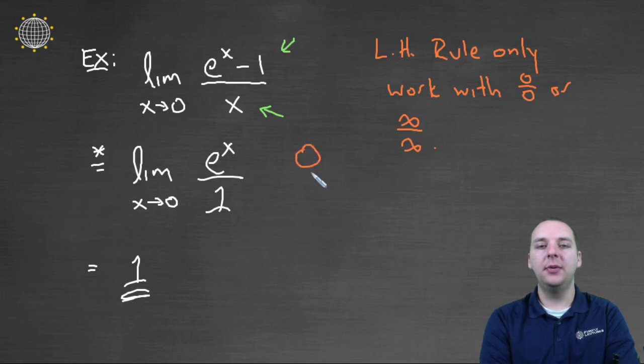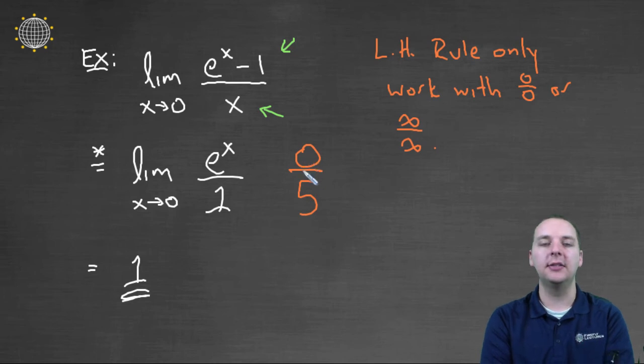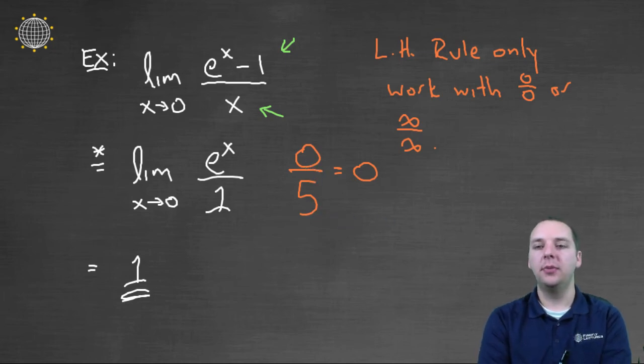Then 0/5 is not indeterminate. Zero over five equals zero, so your answer would be zero. You could not use L'Hopital's rule to do an additional step. Make sure you're only using L'Hopital's rule when appropriate.